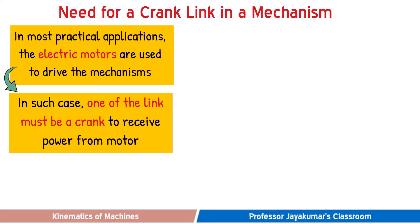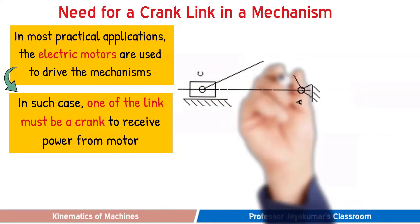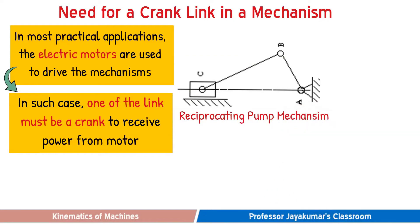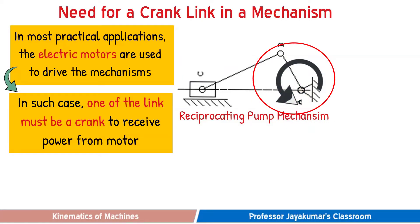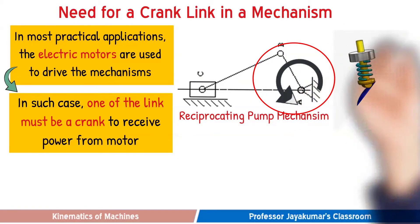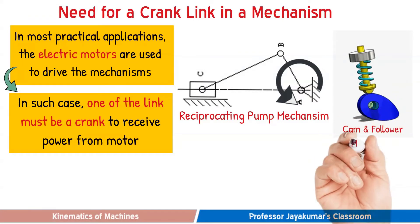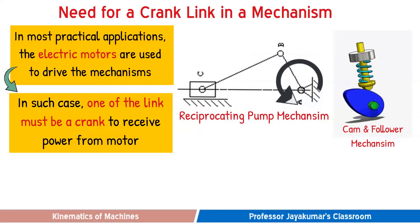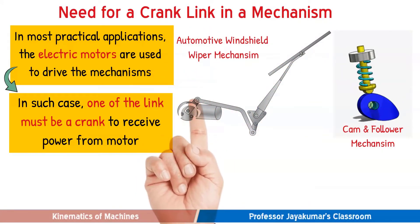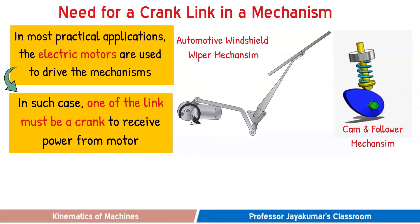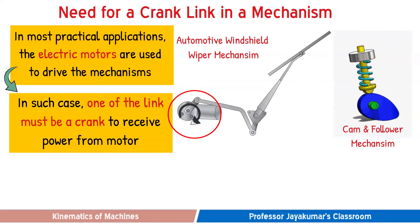Let us see some practical applications to understand this better. This is a typical reciprocating pump mechanism. The reciprocating pump is powered by an electric motor, and that electric motor is coupled with the crank of the mechanism. The second example is a cam and follower mechanism, where the electric motor is coupled with the cam which provides the rotational motion. The third example is the automotive rear window windshield wiper mechanism, where a small electric motor is coupled to the input link which in turn provides the oscillating motion of the wipers.